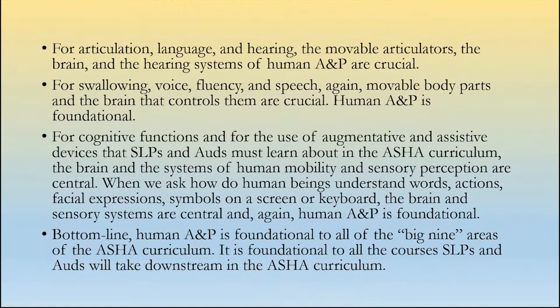Think about these big nine one at a time. For articulation — which is top, front, and center — followed by language and hearing, the movable articulators, the brain, and the hearing systems of human anatomy and physiology are obviously crucial to those three domains. For swallowing, voice, fluency, and speech, again movable body parts and the brain that controls them are crucial. Human anatomy and physiology is foundational.